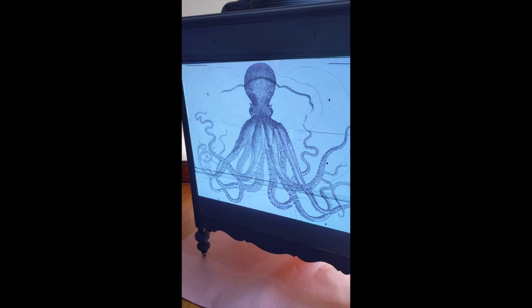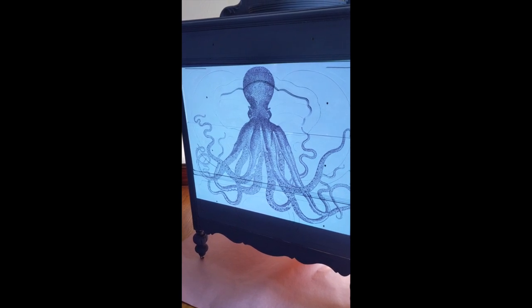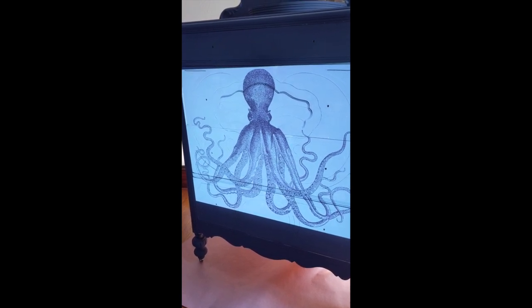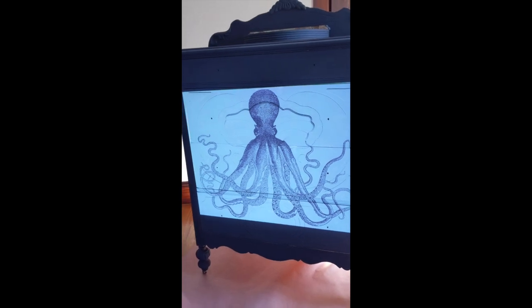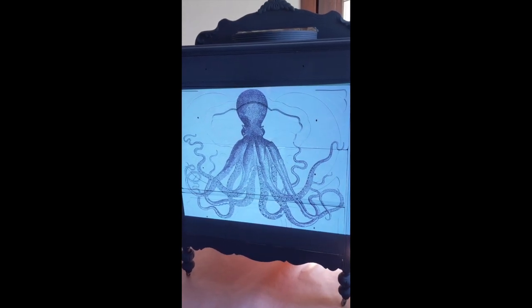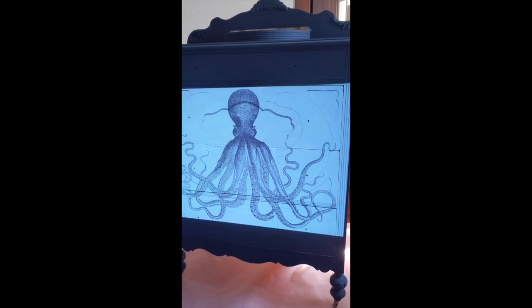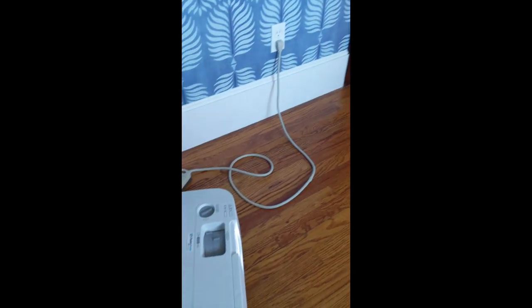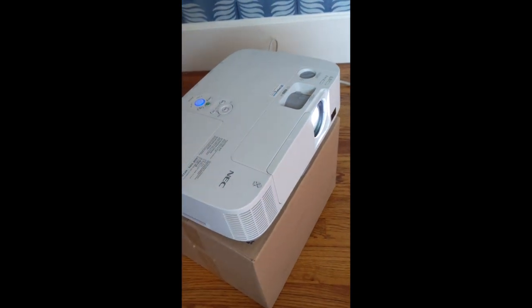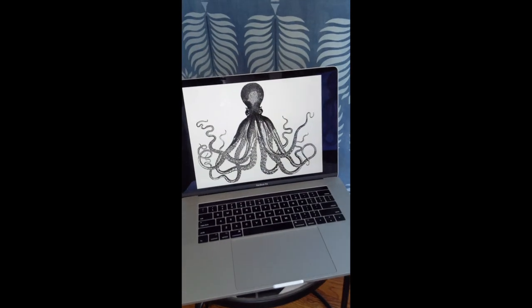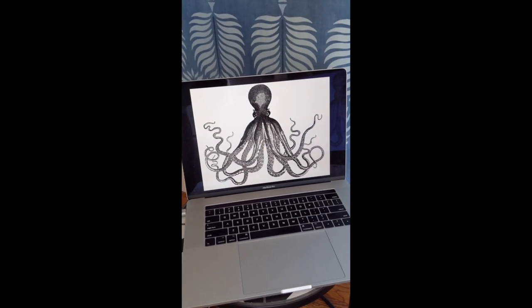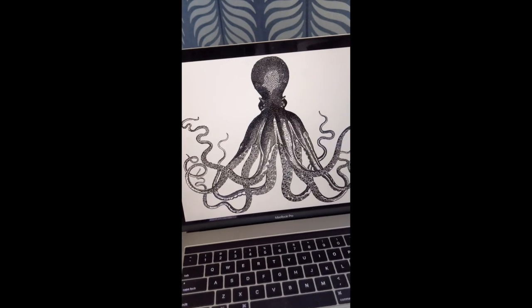Here is the vintage octopus. It is actually a graphic from the Graphics Fairy online, so it's a vintage image. You can make it as big or as small as you want on your piece of furniture. I have a projector here with my computer hooked up with the image, so that's what the actual image looks like.